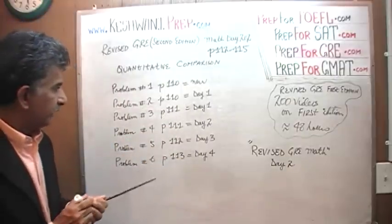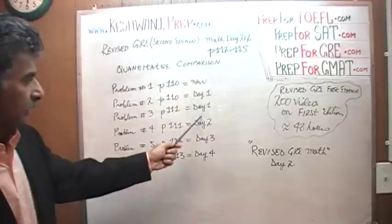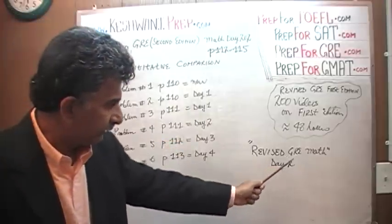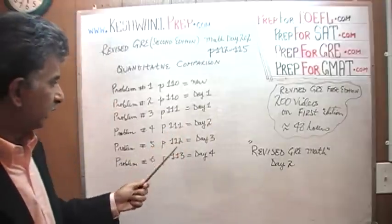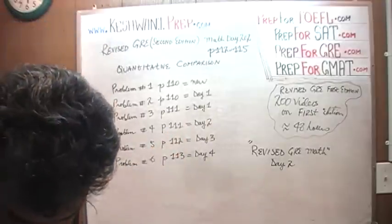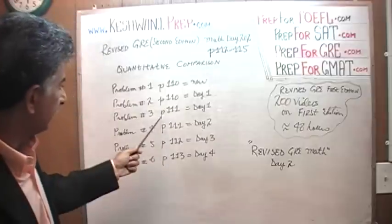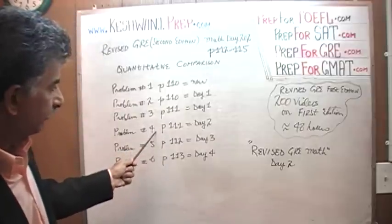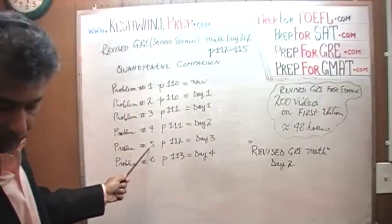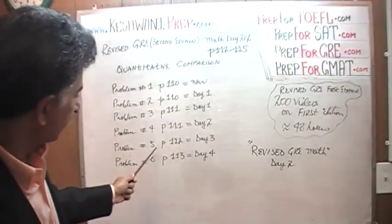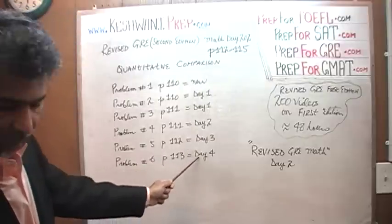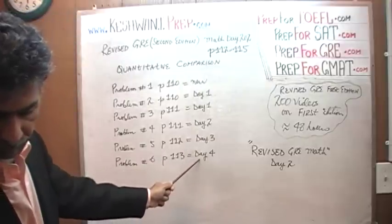Problem number 3 on the same page — I covered it on day 1 as well. Just type in 'Revise GRE Math day 1' and you will see the solutions to both problems 2 and 3. Problem number 4 at the bottom of page 111, we covered it on day number 2. Problem number 5 on the next page, page 112, is day number 3. Problem number 6 is day number 4.